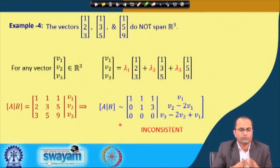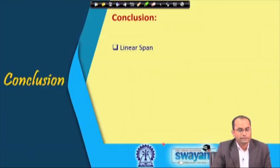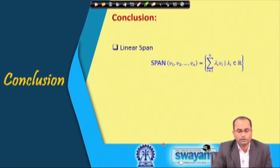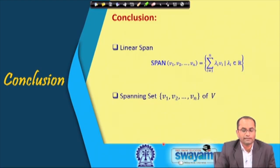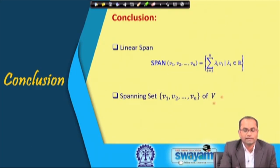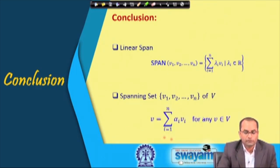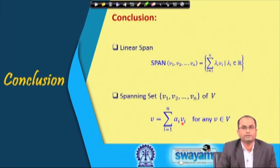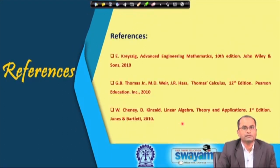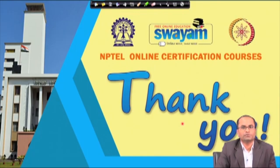In conclusion: the linear span is the set of all linear combinations of the given vectors. A spanning set {v₁, v₂, ..., vₙ} of a vector space V is a set such that any vector in V can be represented as a linear combination of those vectors. More discussion on spanning sets will follow in the next lectures. Thank you very much for your attention.